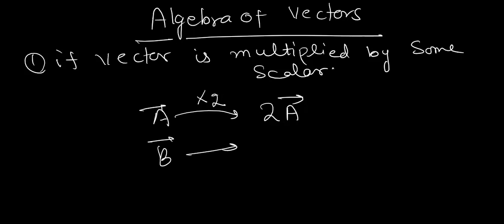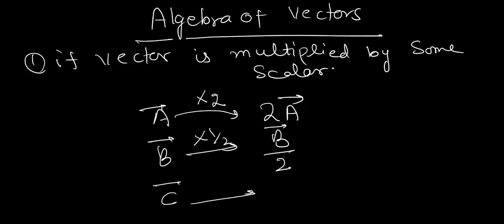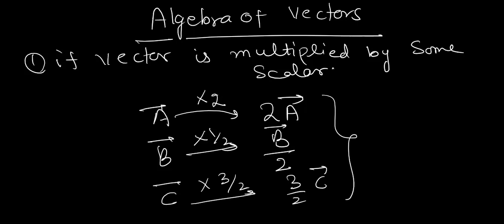B is multiplied by one-half, so I will get B vector upon 2. C vector is multiplied by 3 by 2, so I will get three by two C vector. So this means if I have a vector and a scalar — a number to multiply — I have examples like 2, one-half, three-by-two, and so on.